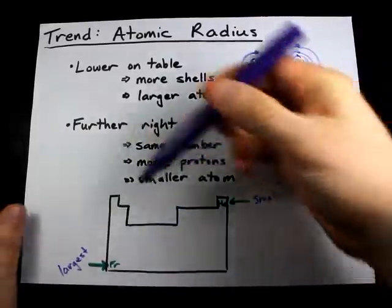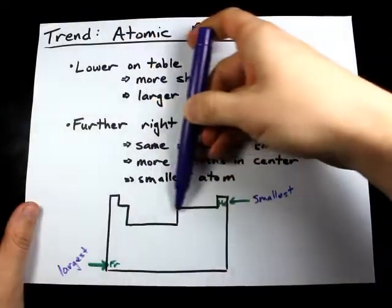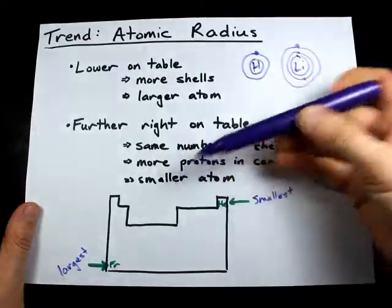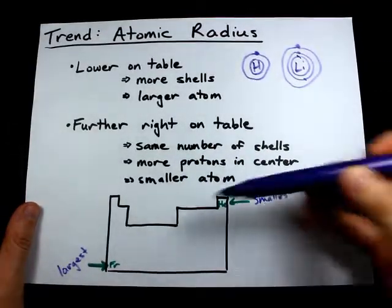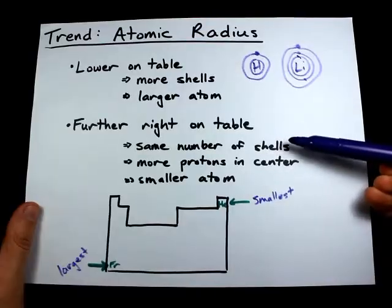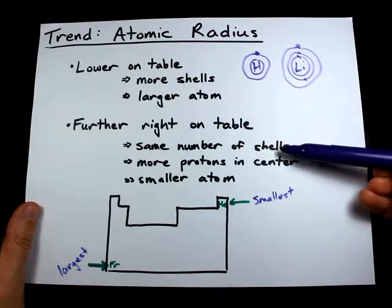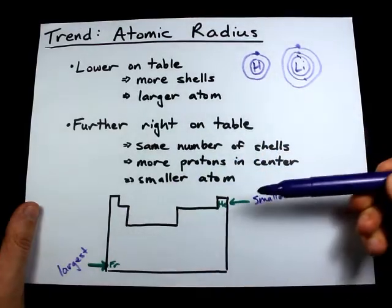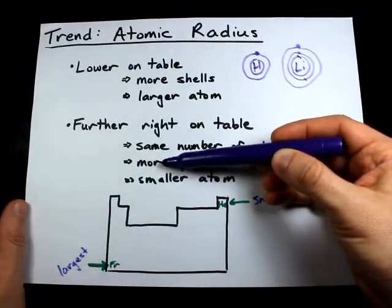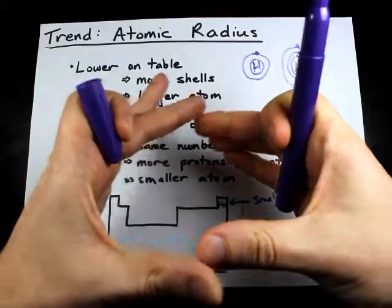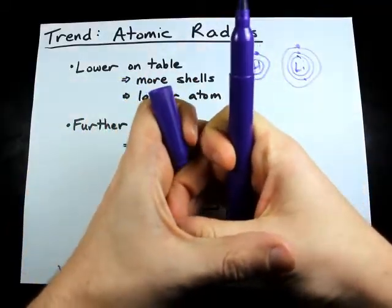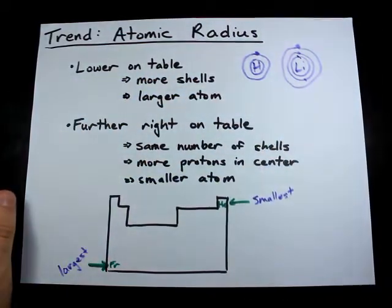But as you move farther to the right, you're still adding electrons, but the atoms are getting smaller. The reason is that you'll have the same number of shells for atoms in the same period or row, but you'll have more protons in the center which are able to hold the electrons in that shell slightly closer to the nucleus, and you end up with a smaller atom.